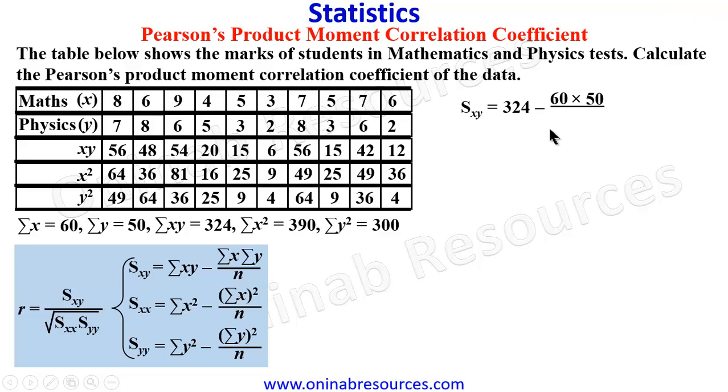N is number of observations. That is giving us 10 because there are 10 scores. And this is equal to 24.